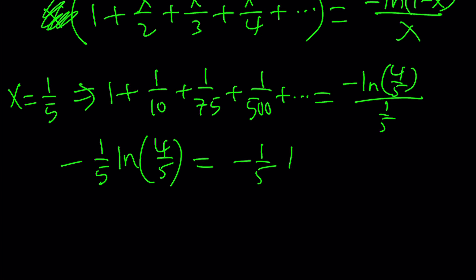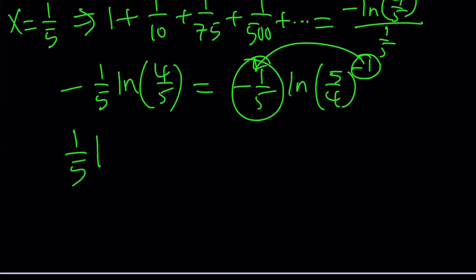I can write it as follows. 4 over 5 is the reciprocal of 5 over 4. Put a negative 1 power. Multiply by this. You're going to get a positive term: 1 over 5 times ln 5 over 4, which is a positive answer because 5 over 4 is greater than 1. So ln of that is going to be positive. Yay! That should be the answer.